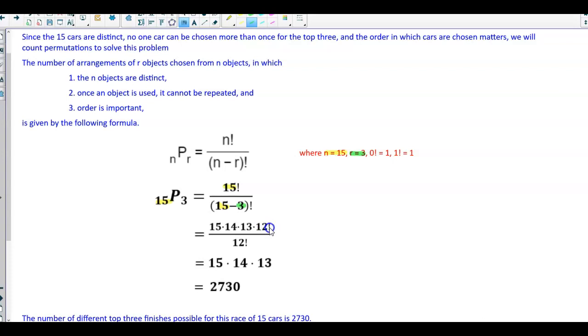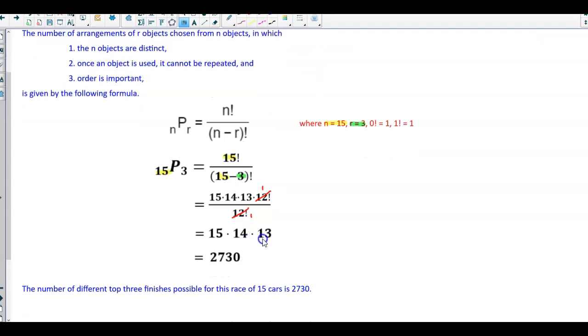We have a common factor in the numerator and denominator. Therefore, 12 factorial divided by 12 factorial is 1. What's left over is 15 times 14 times 13, which equals 2,730.